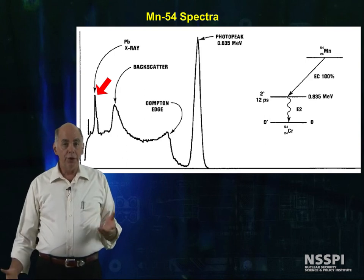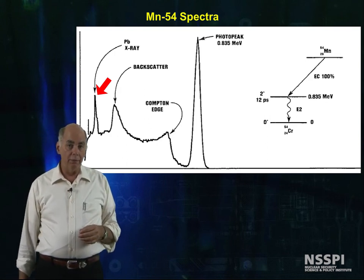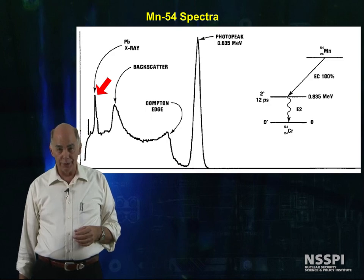We've shown you this because cesium, cobalt, and manganese sources are commonly used for energy calibration.